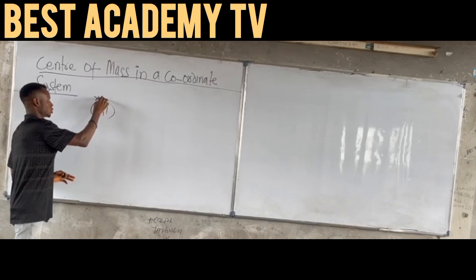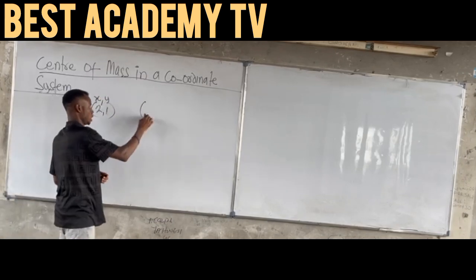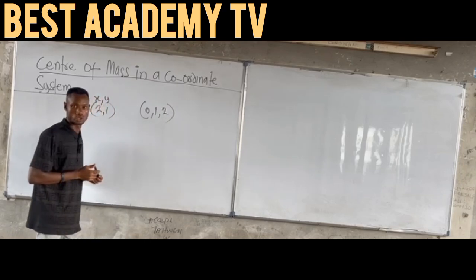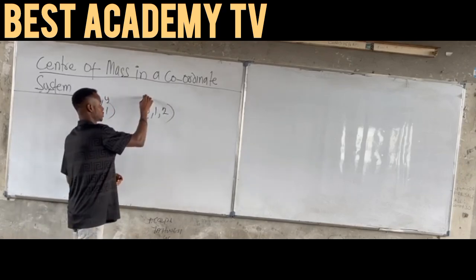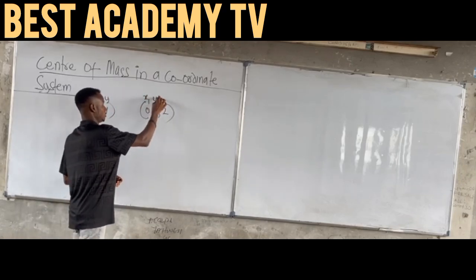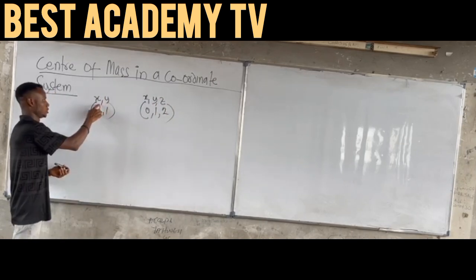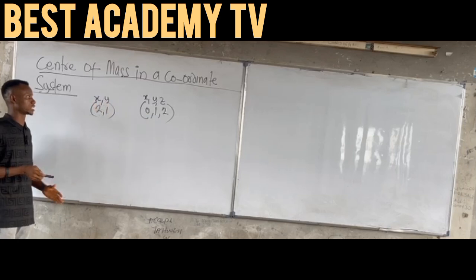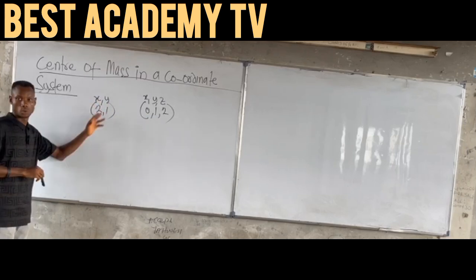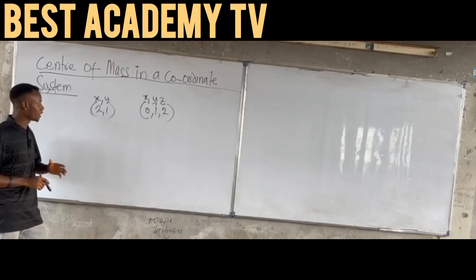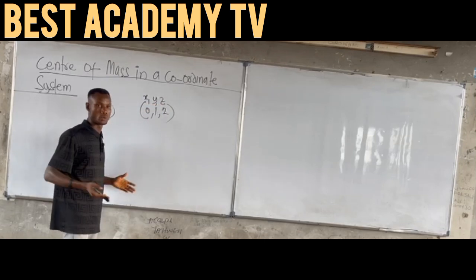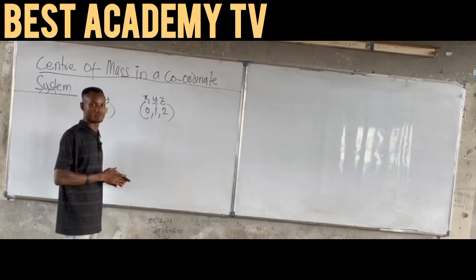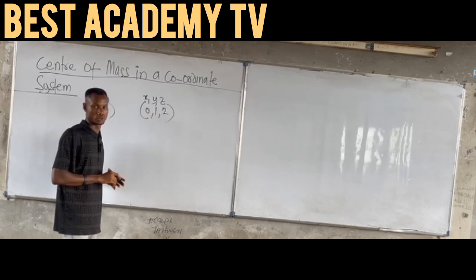If I have 0, 1, 2 — this is a 3-coordinate system with S, Y, and Z. Please take note. So if I have S and Y, we are required to find two coordinates: the S coordinate system and the Y coordinate system. If I have S, Y, Z, we are going to calculate S center of mass, Y center of mass, and Z center of mass.